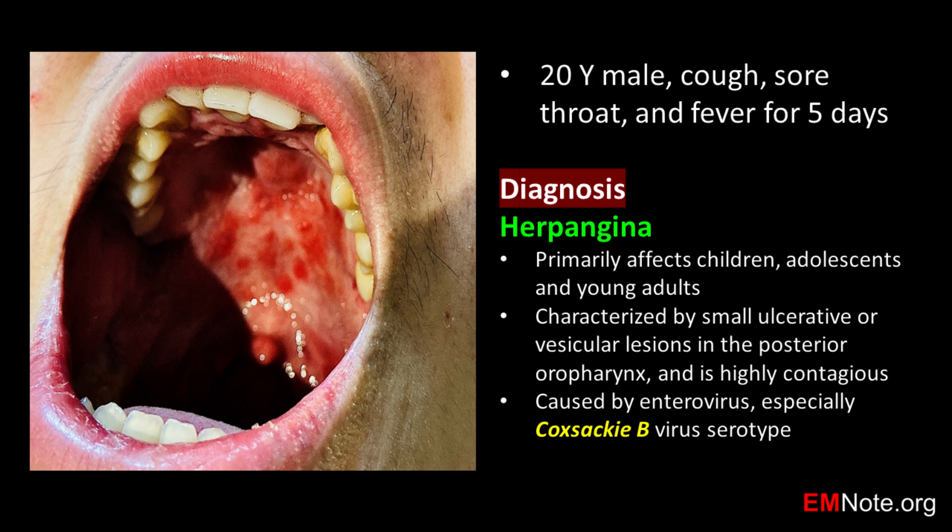Herpangina is caused by enteroviruses, with the Coxsackie B virus serotype being the most common. The virus is spread through respiratory droplets, saliva, directly touching fluid from a sore, or through stools.